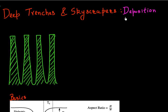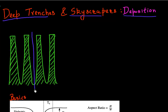The second problem regarding the process technology of deep trenches and skyscrapers is how do we deposit or how do we conformally fill these structures. So let's say I have this silicon STI that I etch, and what I want to do is conformally fill it with oxide — I don't want to leave any air gap. This becomes a very challenging thing to do.